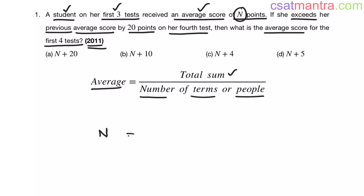So average is N. Total number of points we don't know, let's call it X. Number of terms, number of tests are 3. Now X equals 3N.